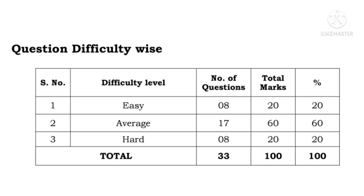Now let us see the different questions and their Difficulty Level. 8 questions are Easy questions and they are allotted 20 marks. 17 questions are Average Type Questions and they are allotted 60 marks. And 8 questions are Hard questions and they are allotted 20 marks. Total 33 questions, 100 marks.